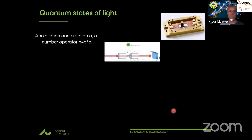The fields are quantum observables obeying mathematical properties we know from quantum mechanics. The Maxwell equations in this way become equivalent to the Heisenberg equations of motion for the field operators — that is how we quantize the radiation field. When we talk about states of light, we're not talking about observables but about wave functions or density matrices — that's the Schrödinger representation of quantum mechanics.